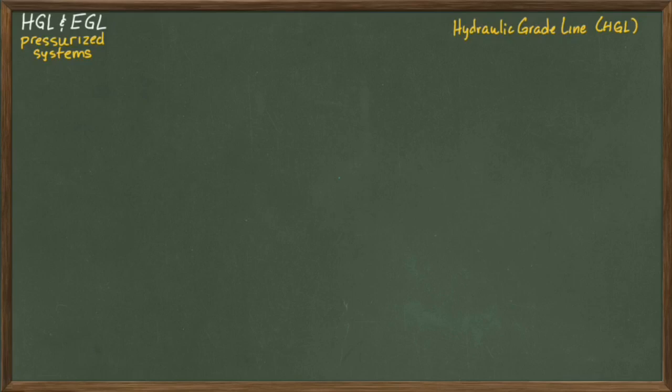This line represents the amount of potential energy at any point along a given pipeline. Without flow in any direction, the potential energy is captured by the elevation of the pipe as well as the pressure head P over gamma in the pipeline.